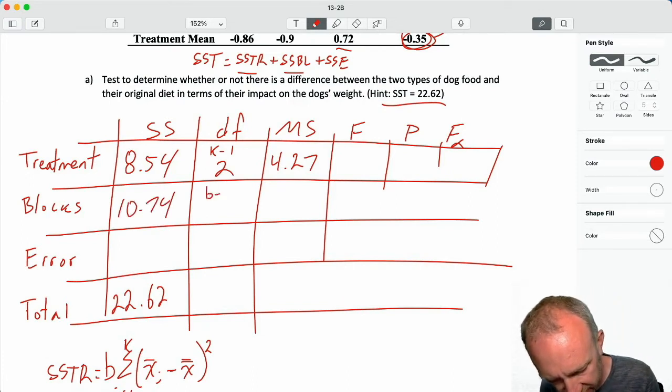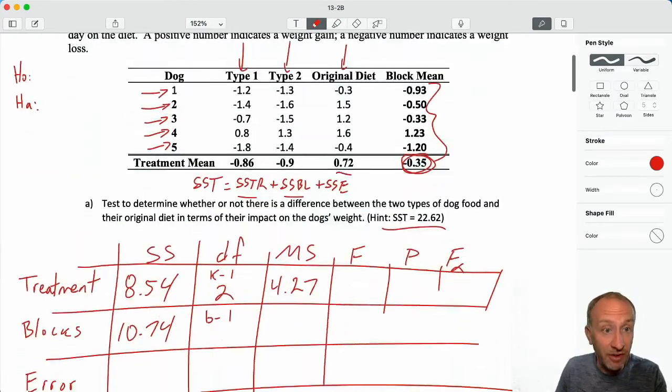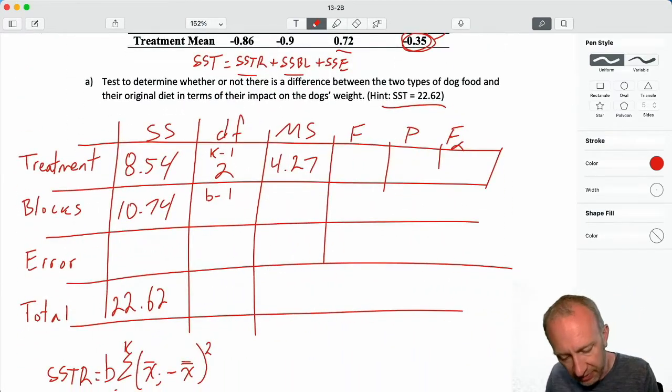Block degrees of freedom, b minus 1. So 5 minus 1, I have 4. 10.74 divided by 4 is 2.69.